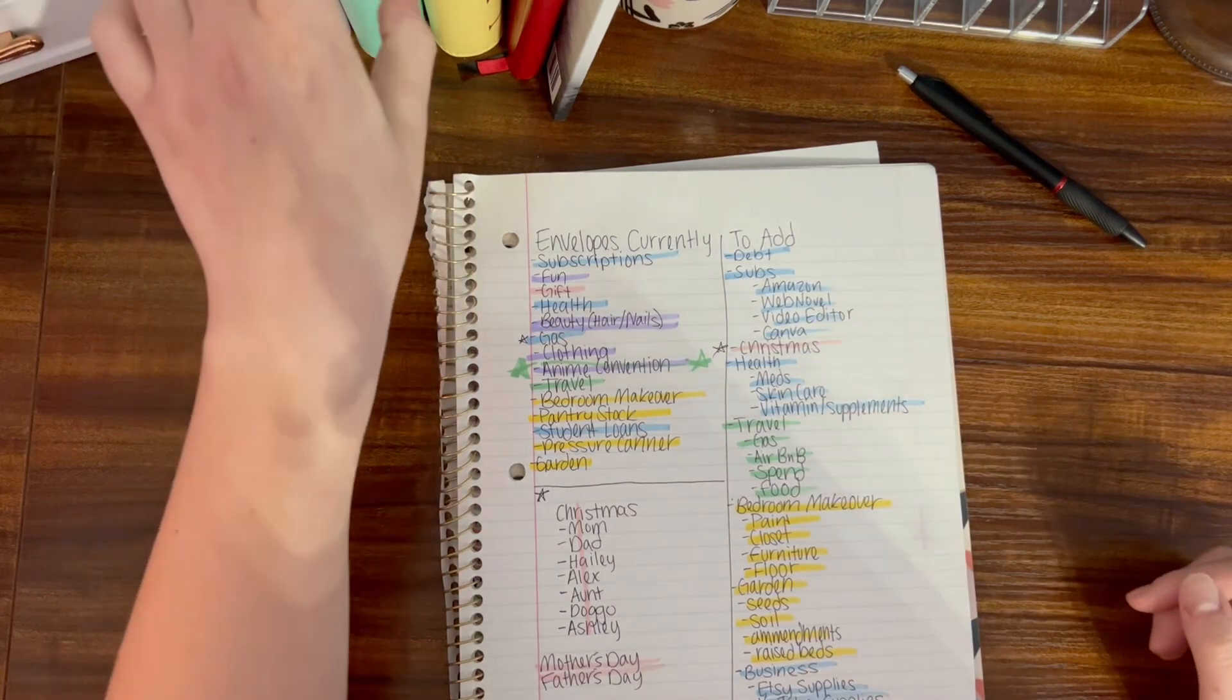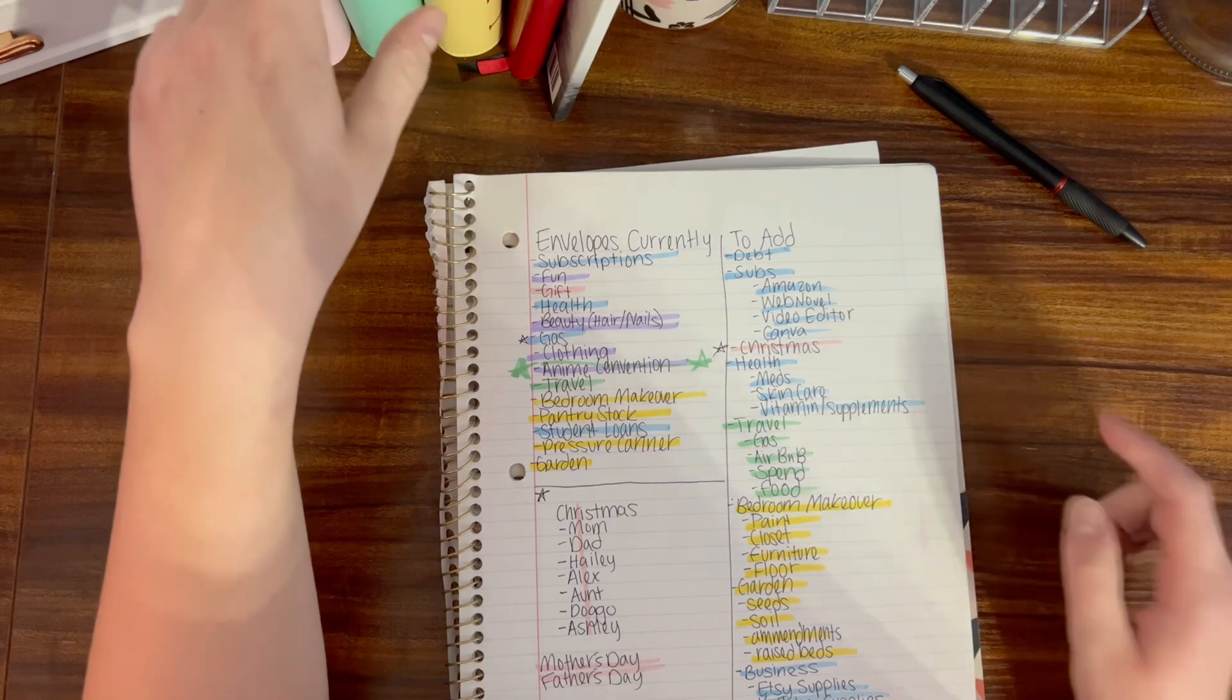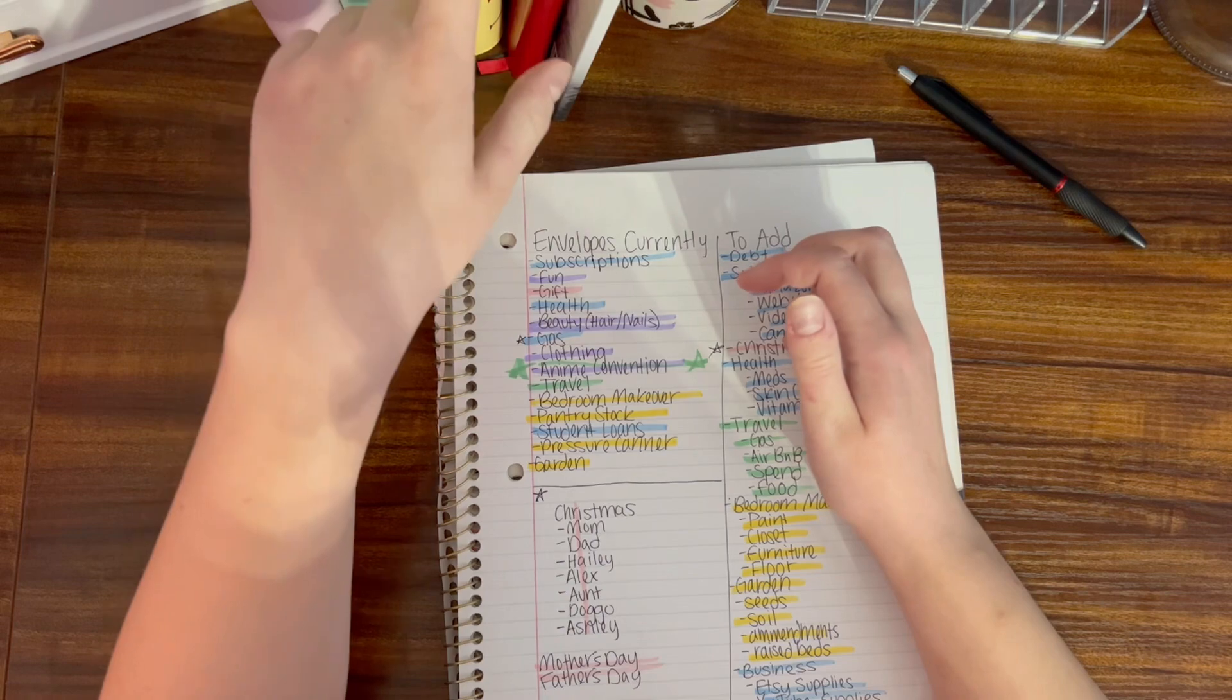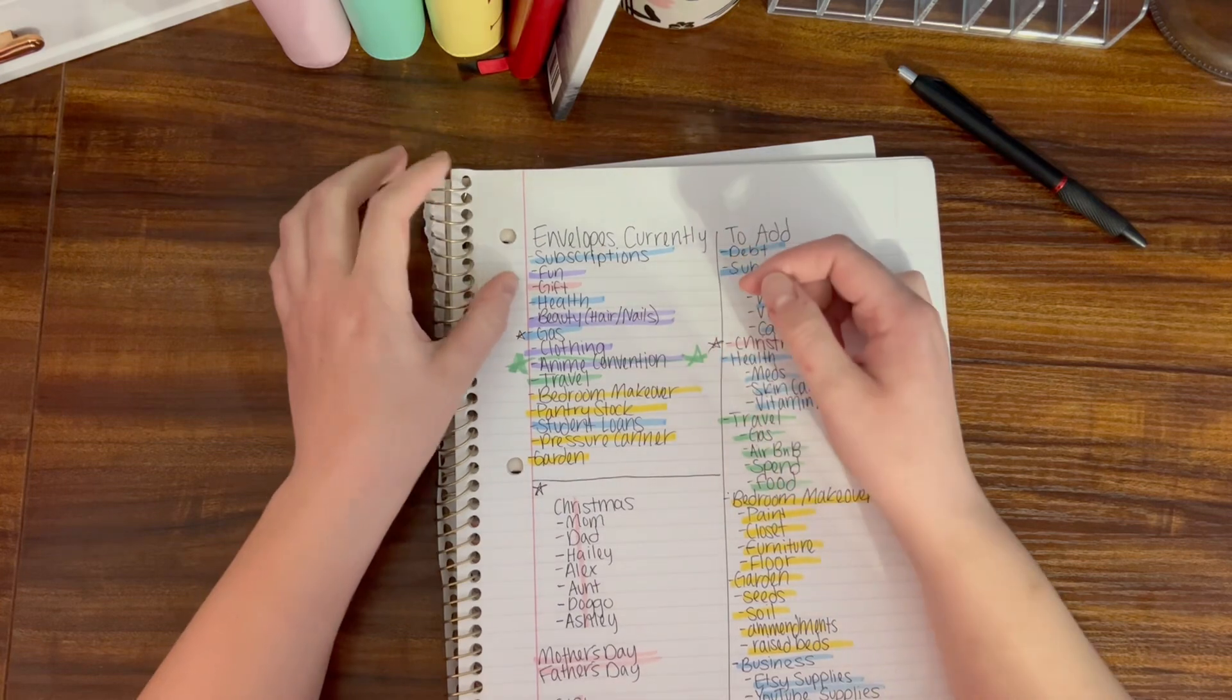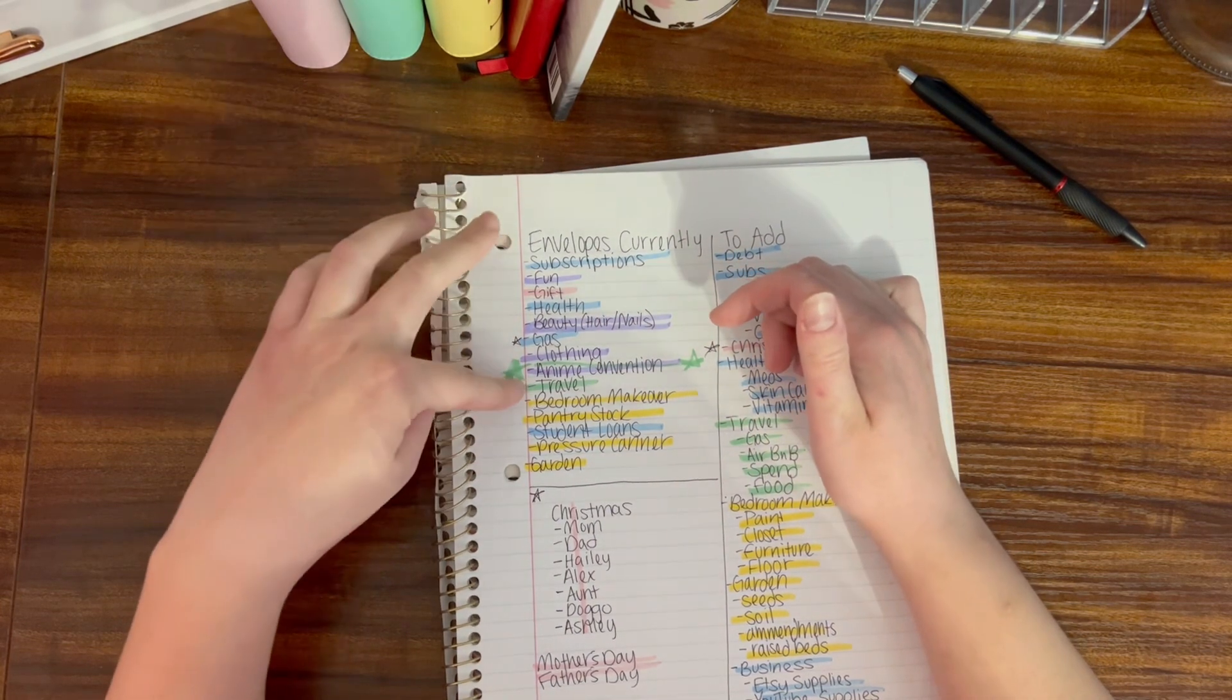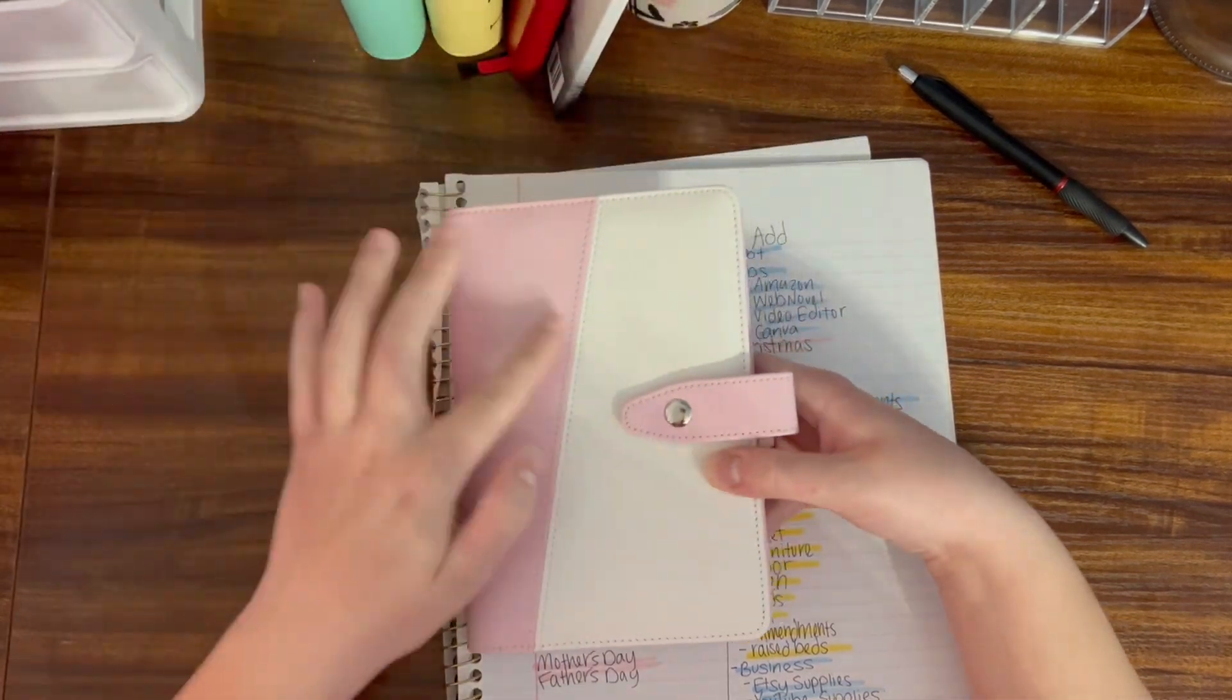I have a pink binder, this is kind of like a greenish blue binder, and then this one is my savings challenge binder. I'm looking to get a purple binder and a yellow binder, and then like a fully brown one I'm looking at right now.